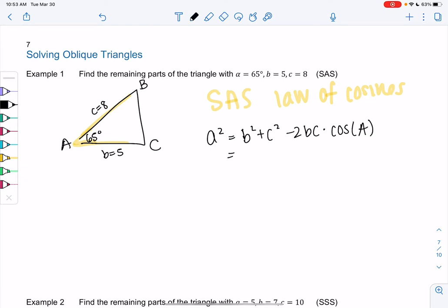So we get 5² + 8² - 2 times 5 times 8 times cosine of 65 degrees.